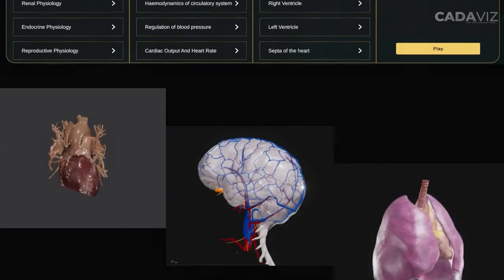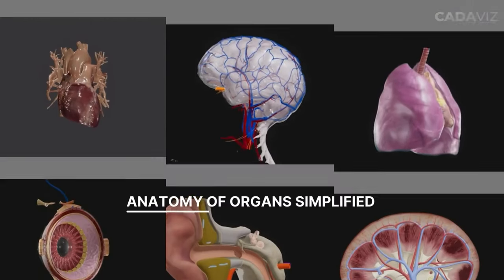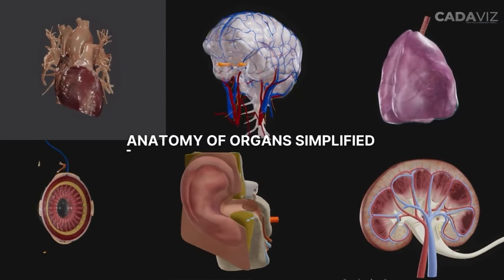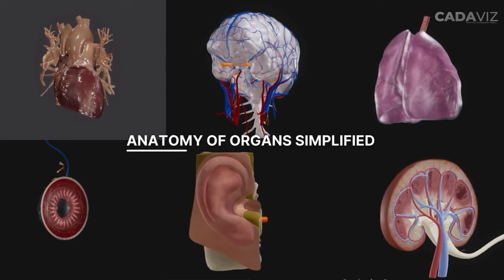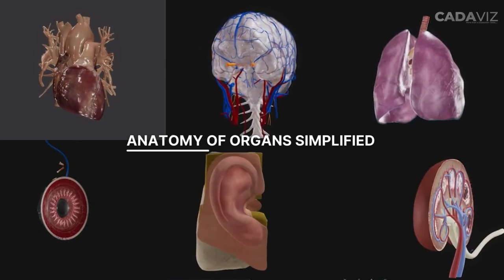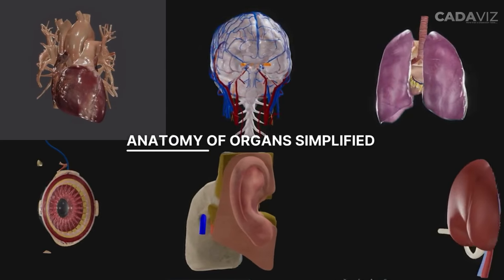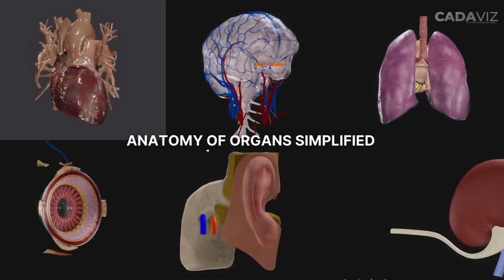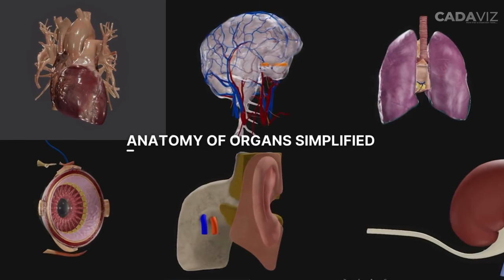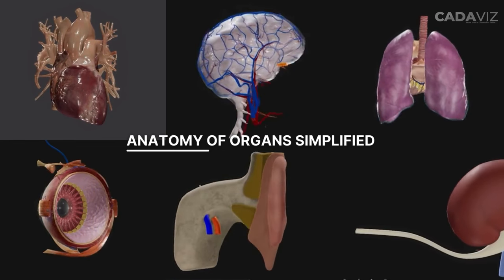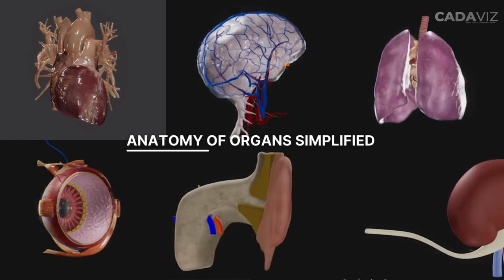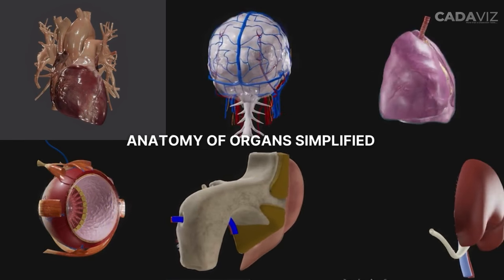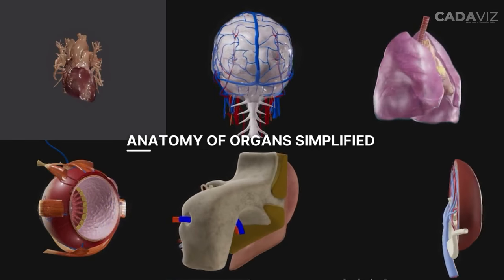This section involves a systematic study of a dismembered body to gain detailed insights into the anatomy of organs and their associated structures. You can explore the anatomy of organs like the heart, brain, lungs, eyes, ears, kidneys, and many others, witnessed like never before.